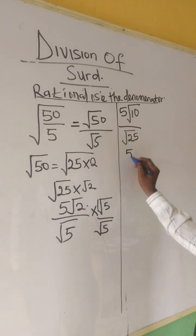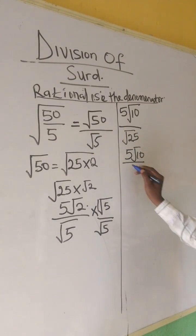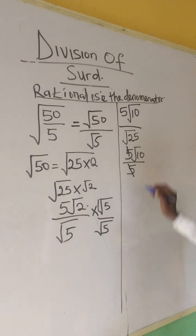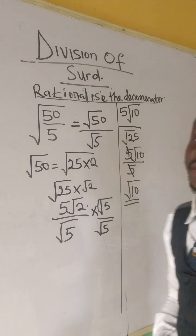Then we now have 5 root 10 over the root of 25 is 5. So, 5 cancel 5. Then we have root 10 as our answer.